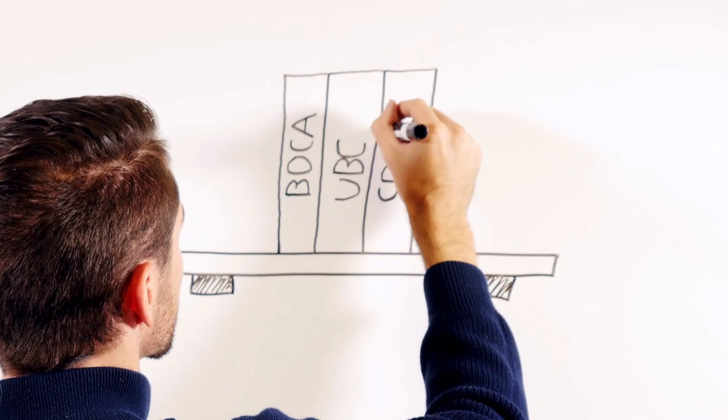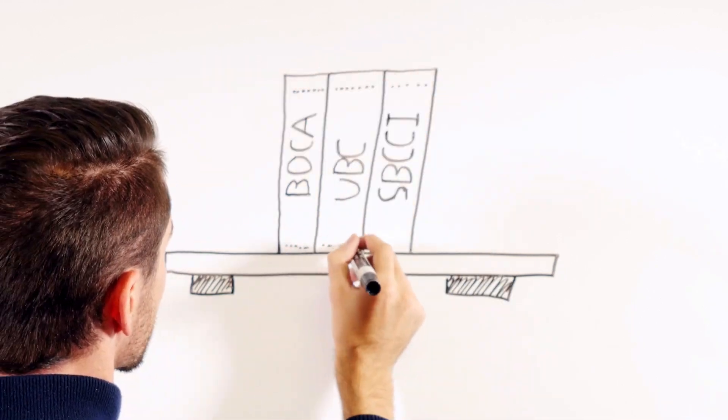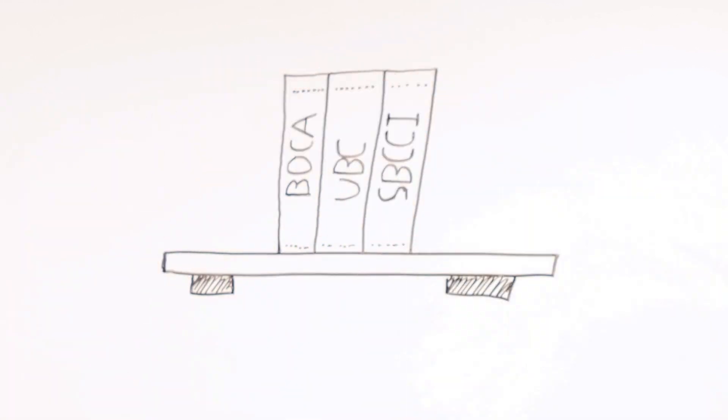The organizations responsible for these codes worked together to form the International Code Council, or ICC, and to create the 2000 edition of the International Building Code. The IBC has been revised in a three-year cycle since 2000.